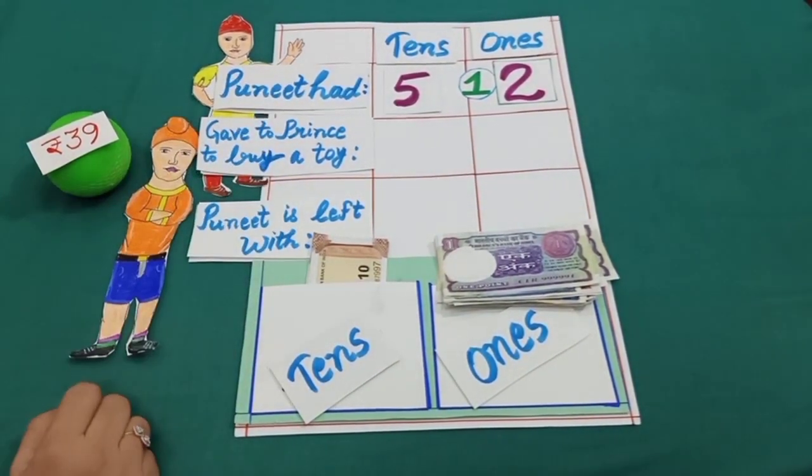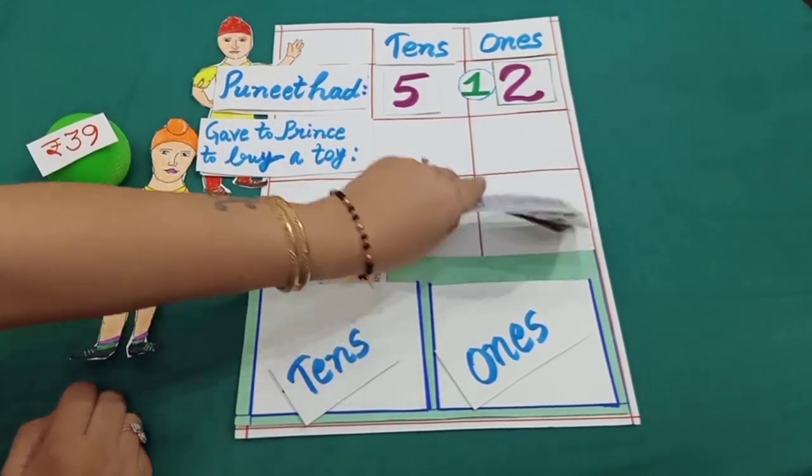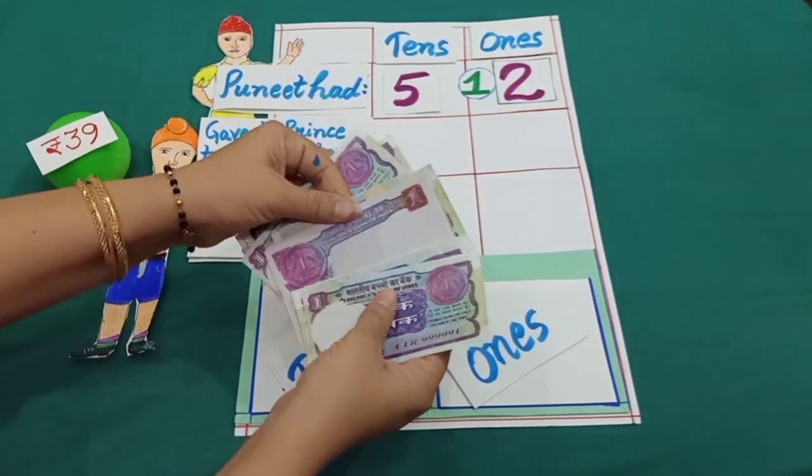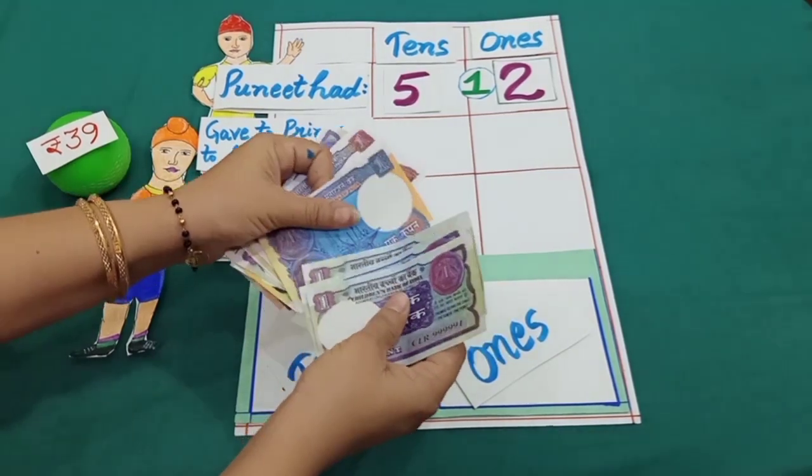Now Puneet can easily give 9 rupees to Prince to buy a toy. Let's see. 1, 2, 3, 4, 5, 6, 7, 8, 9. 9 rupees is equal to 9 ones.